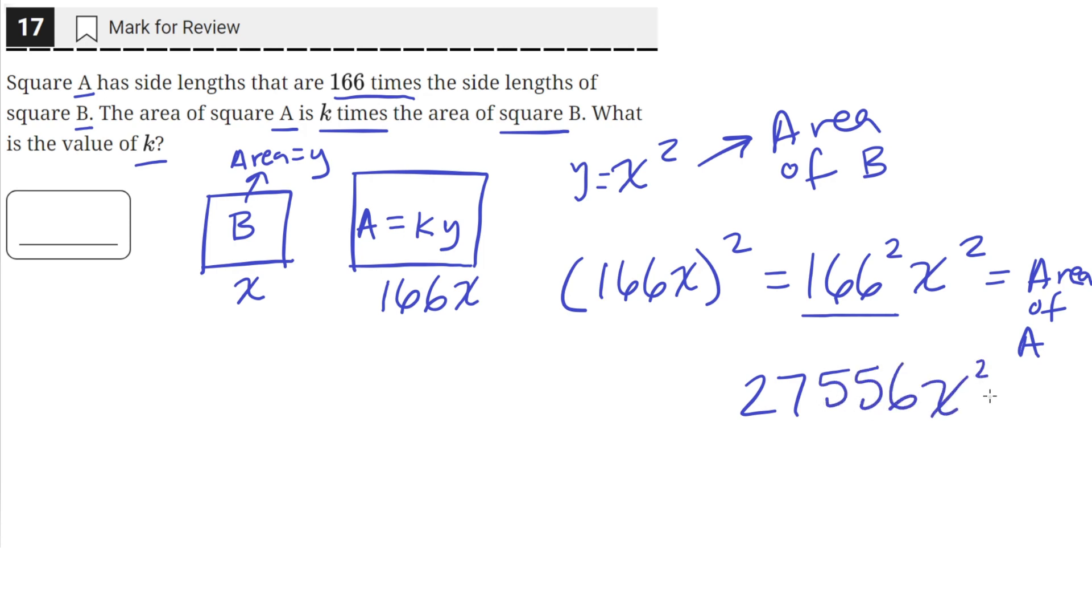So this is the area of A. And we can see that this giant coefficient here is the value of k, since it's in front of, or being multiplied with, the area of B.